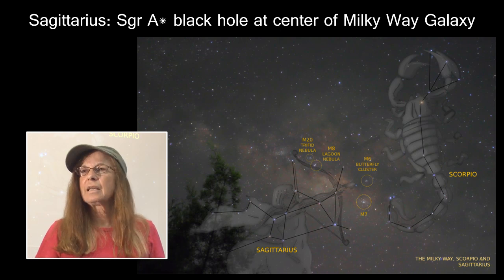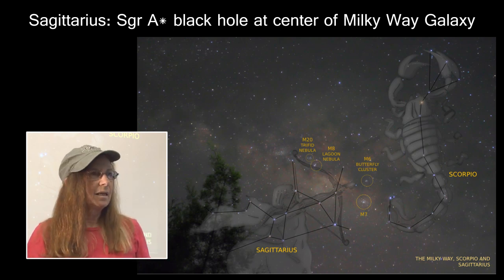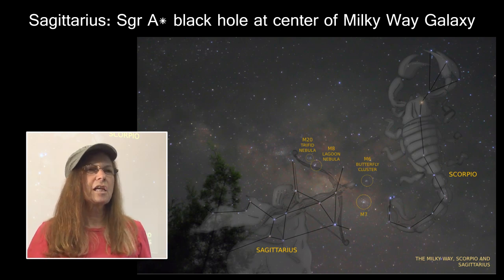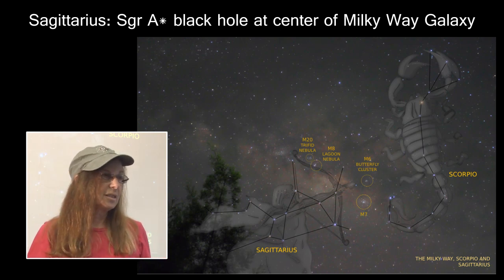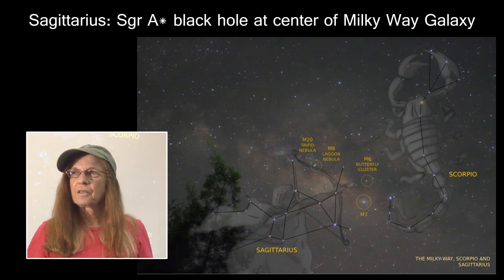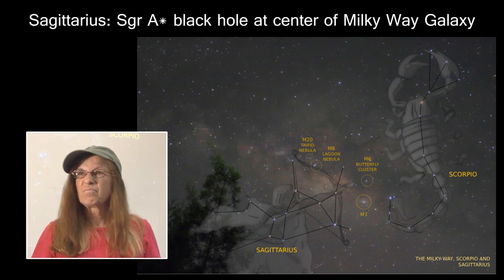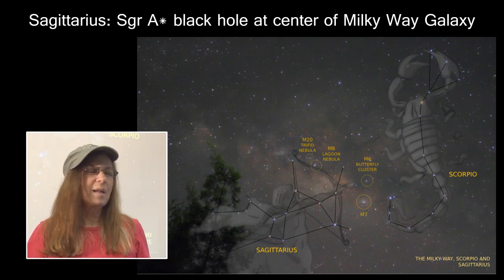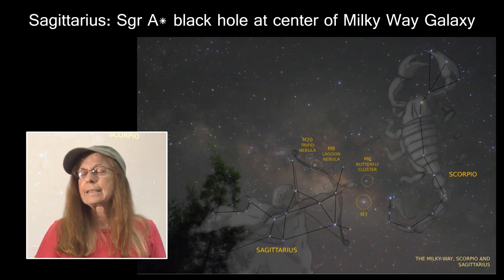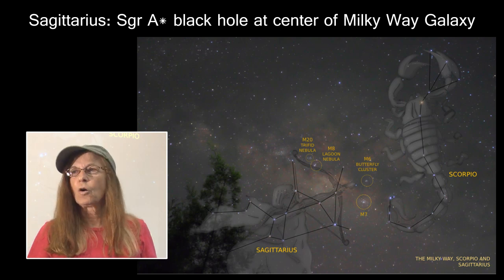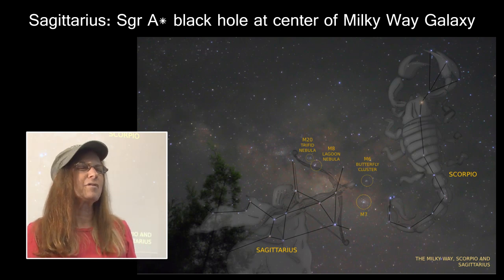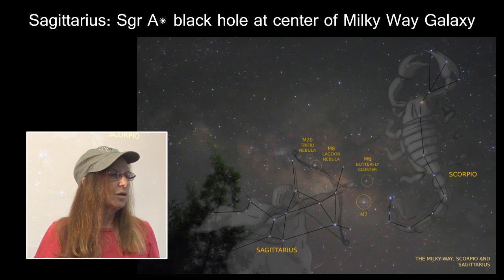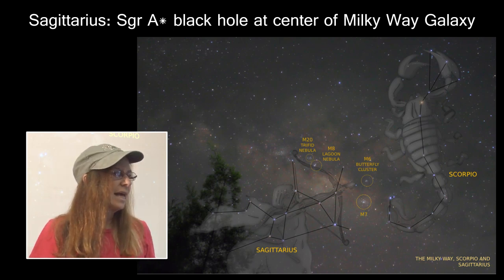Sagittarius is the constellation where, if you're looking towards it, you're looking at the center of the Milky Way galaxy — the location of Sagittarius A*, the 4 million solar mass black hole at the center of the Milky Way. Kind of a wimpy black hole, but as you've seen from some of those other images, it's not good to live in a galaxy that has a really extremely active, super-massive black hole. So we're quite happy with our wimpy little Sagittarius A*.